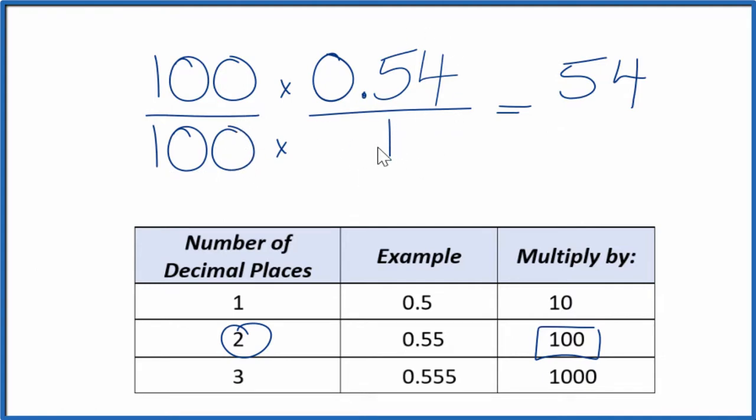So we're only multiplying by 1. And again, we're not changing the value, just the way it's written. So 100 times 1, that gives us 100. And we have 54 over 100. So this is a fraction for the decimal 0.54.